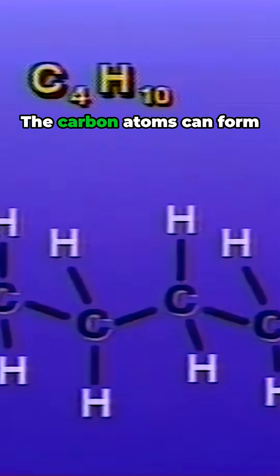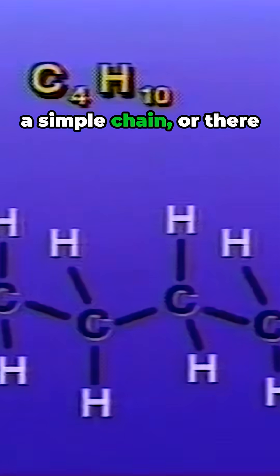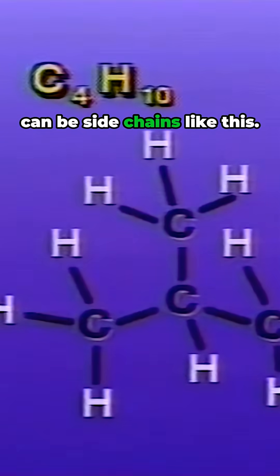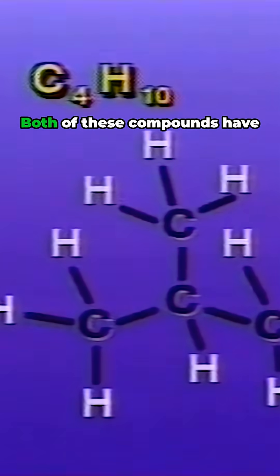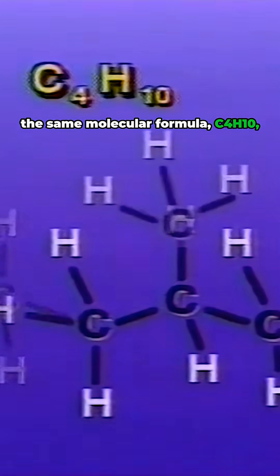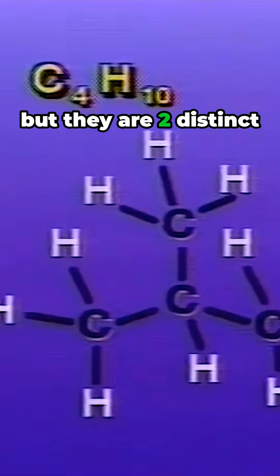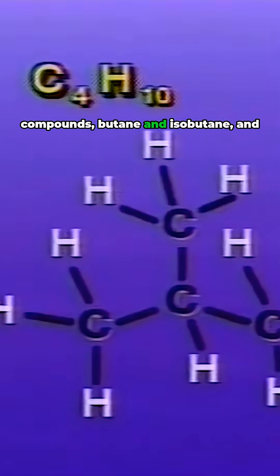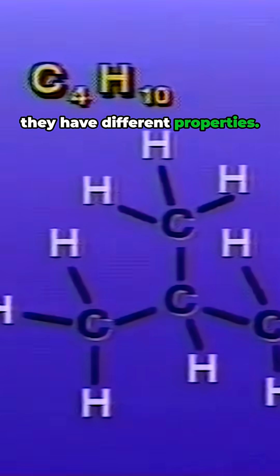The carbon atoms can form a simple chain, or there can be side chains, like this. Both of these compounds have the same molecular formula, C4H10, but they are two distinct compounds — butane and isobutane — and they have different properties.